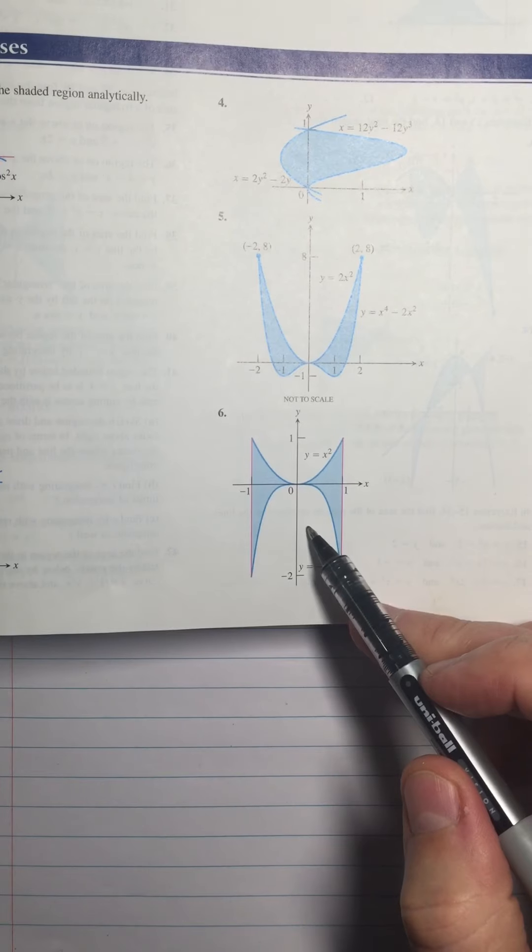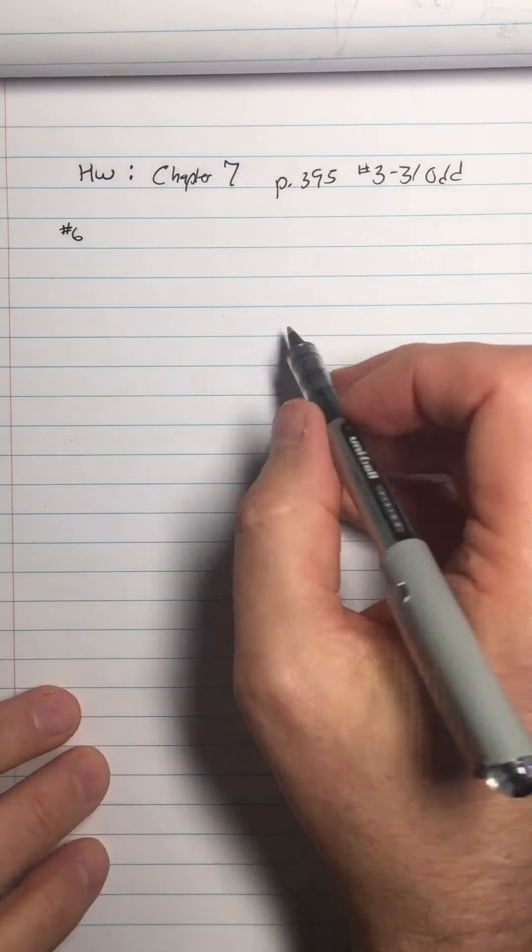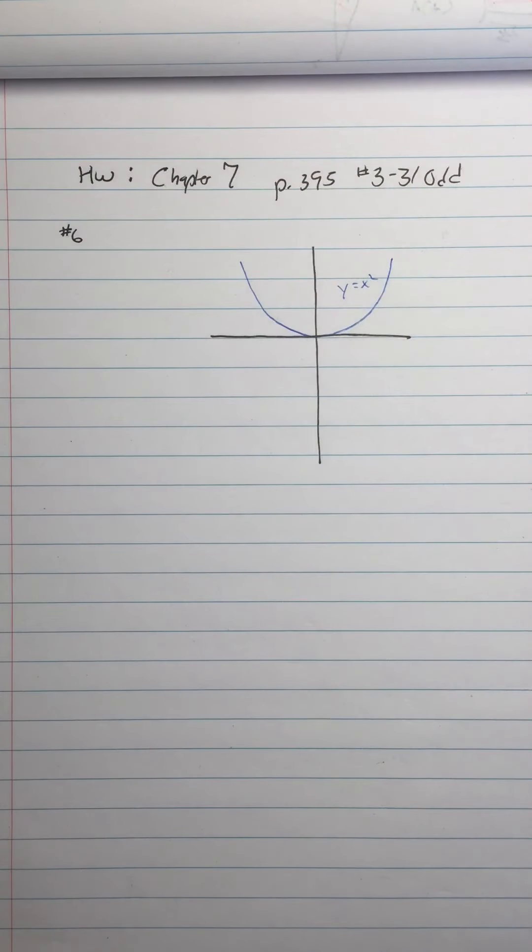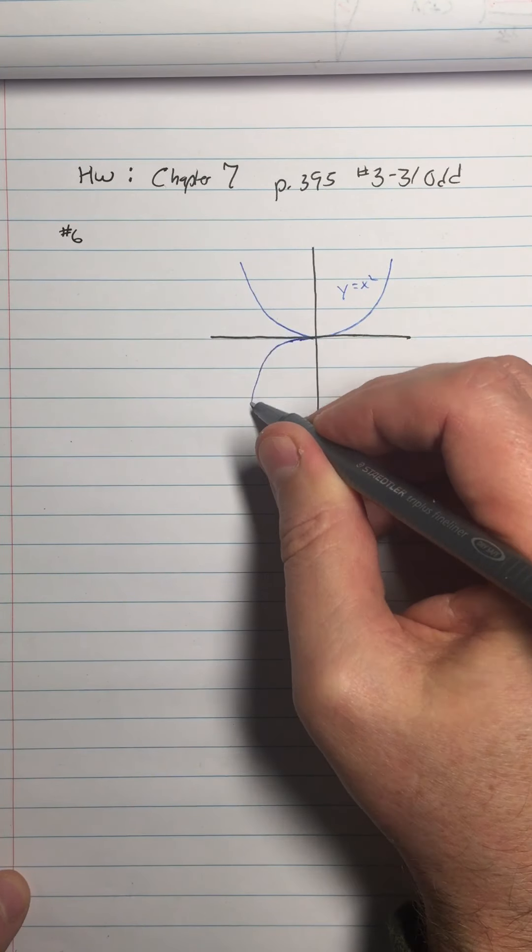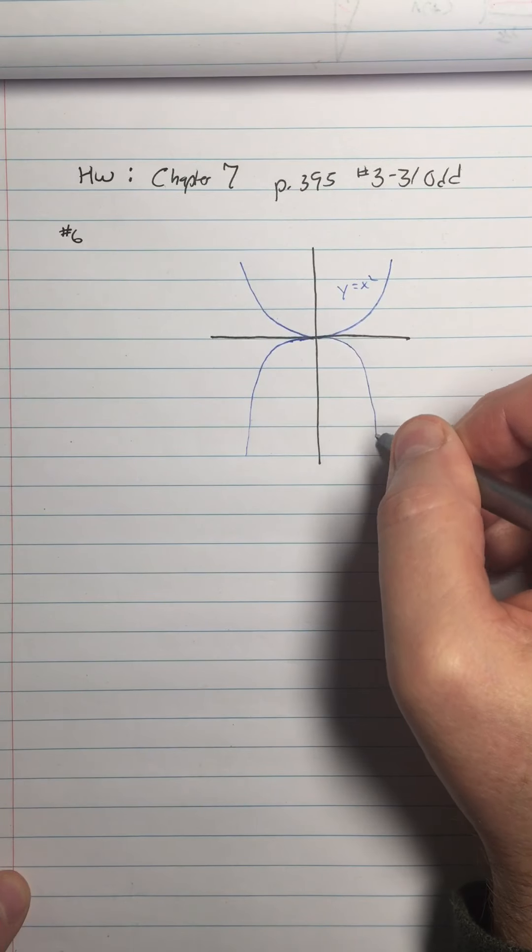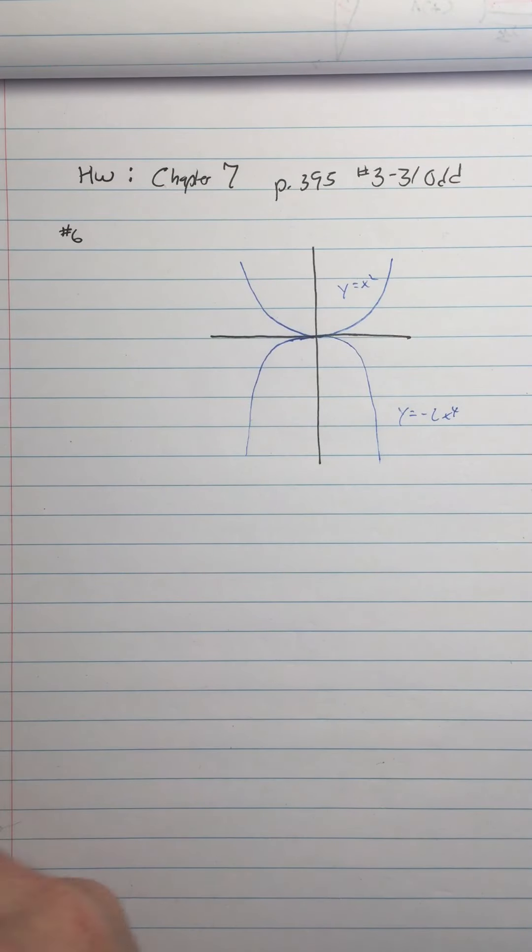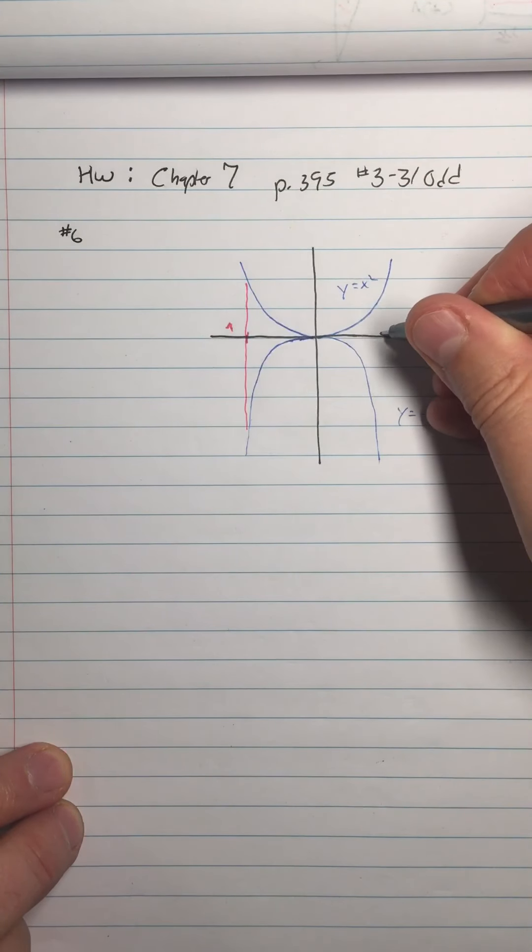So if you look at page 395, number 6, it looks like this, and it says find this area. So I'll see if I can sketch it out, and then we'll do it in the next video. So I have a graph that looks like this, and I have y equals x squared. Y equals x squared, and then I have this is negative 2x to the fourth, so it's going to be sort of flatter than a parabola. So here's y equals negative 2x to the fourth, and we're finding the area from negative 1 to 1. So here's negative 1, and we're going from here to here, and here's positive 1.